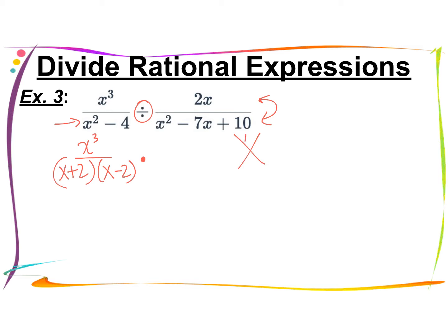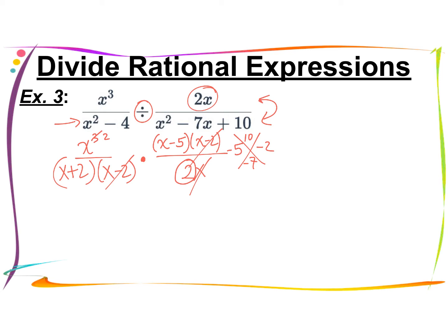I factor the trinomial in the second fraction: what multiplies to 10 and adds to negative 7 — that's negative 5 and negative 2. Since a equals 1, I go right to x minus 5 and x minus 2. The 2x comes down as my denominator. The x minus 2s simplify to 1. In the numerator of the first fraction I have 3x, and in the denominator I have 1x — so I cross off the x and change 3 to a 2, but don't lose the 2 below. The simplified numerator is x squared times x minus 5, and I bring whole numbers to the front: 2 times x plus 2.